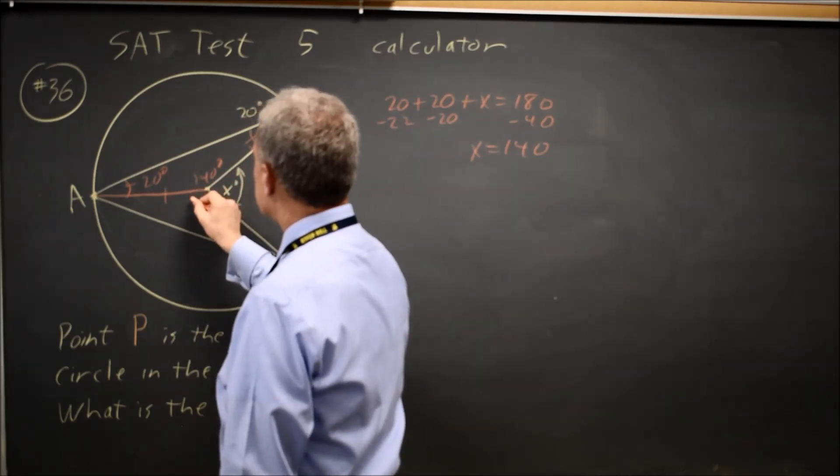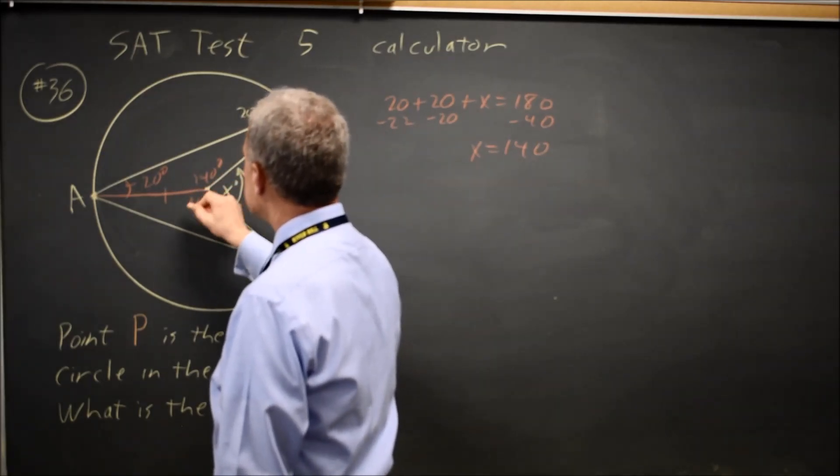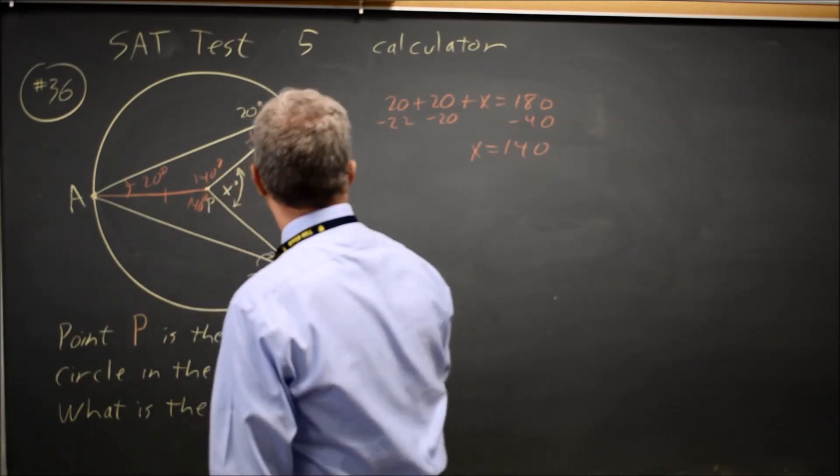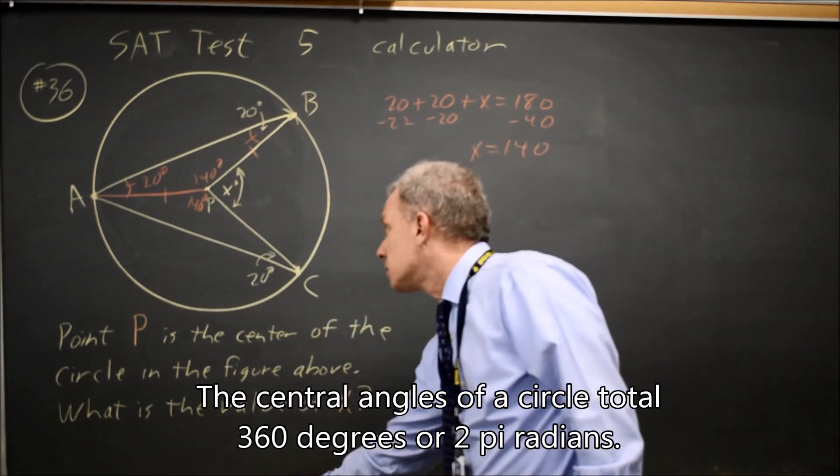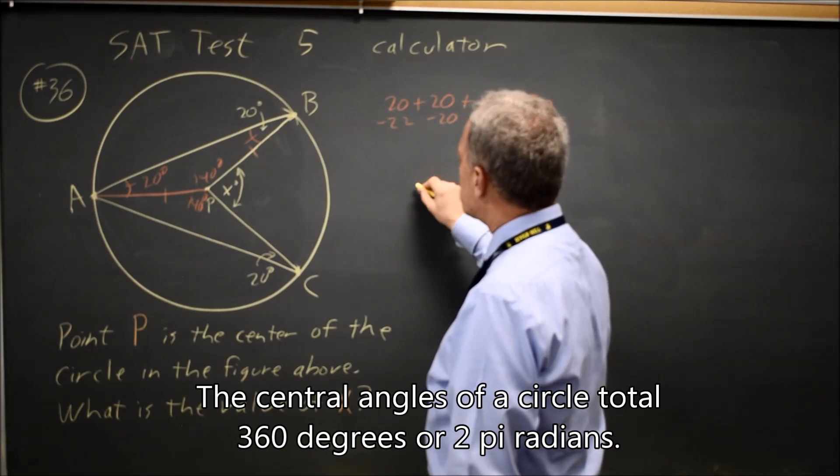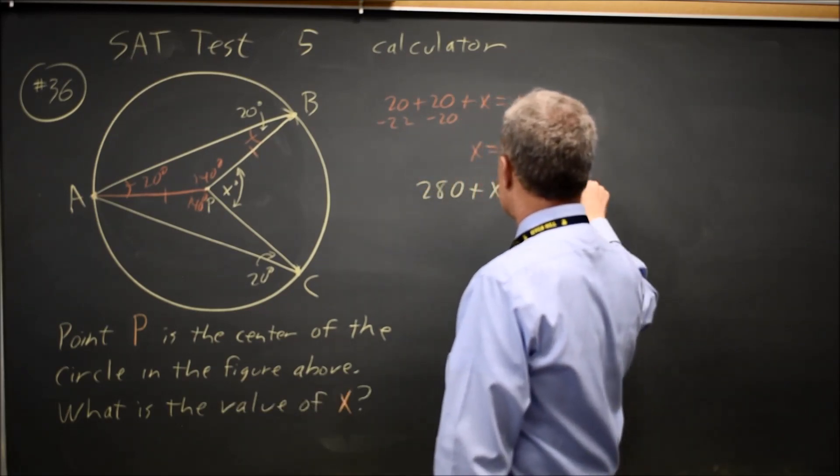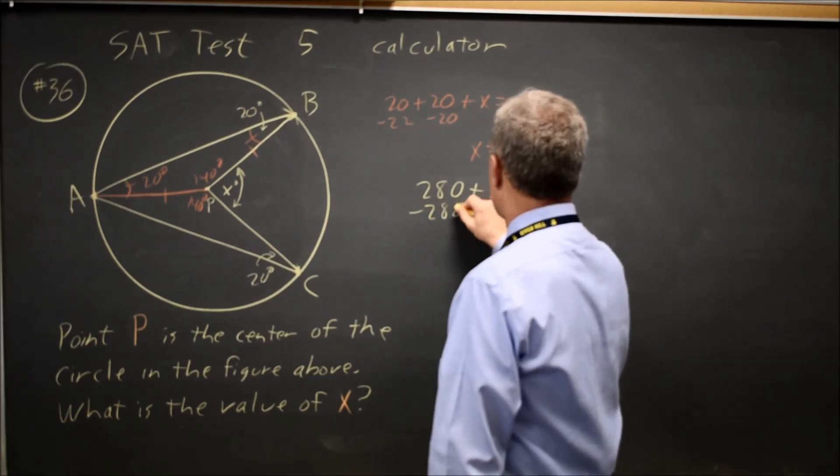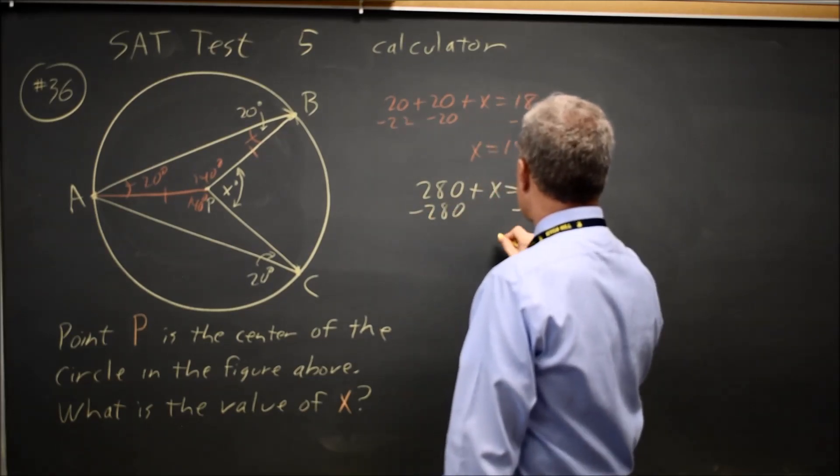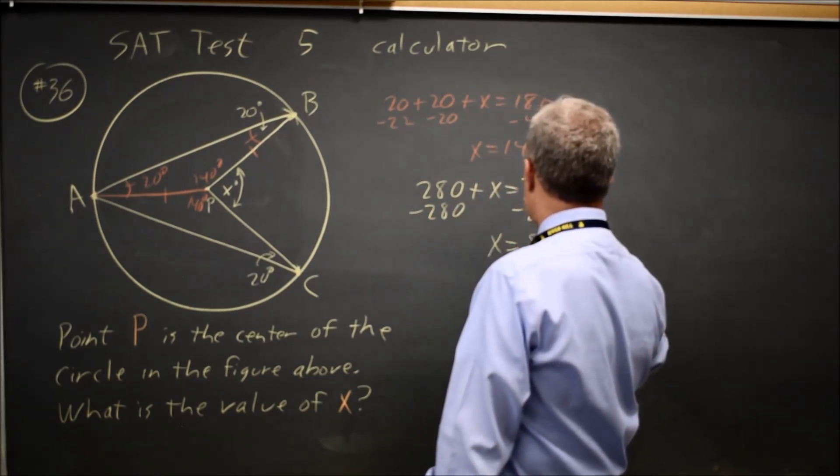This angle down here is also 140 degrees, and these two angles plus X add to 360. 140 plus 140 is 280. X equals 80 degrees.